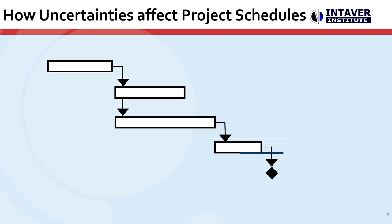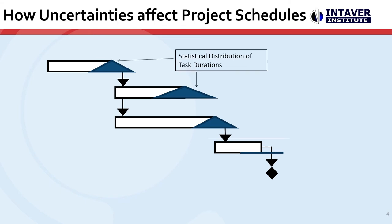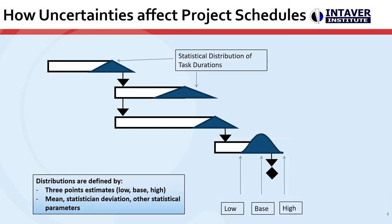Schedules also have uncertainties, which are variances that are not associated with risk events. All activities have uncertainty. This can be caused due to estimate errors, but also due to other factors. Uncertainties are defined by statistical distributions defined by three-point estimates. The most used distribution is triangular, as it is easy to understand and does not require advanced knowledge of statistical methods. A fully risk-adjusted schedule can have both risk events and uncertainties.